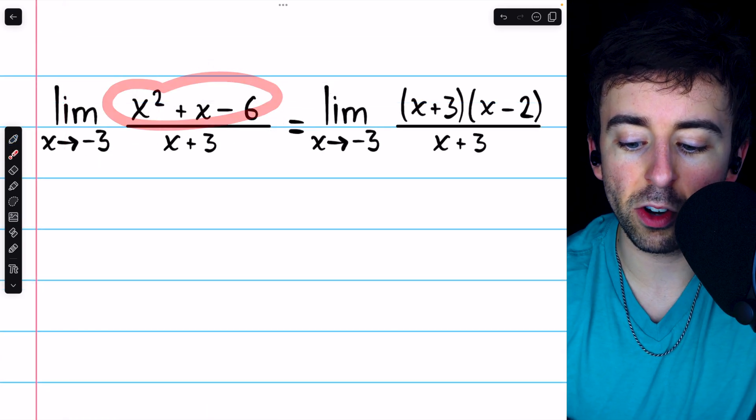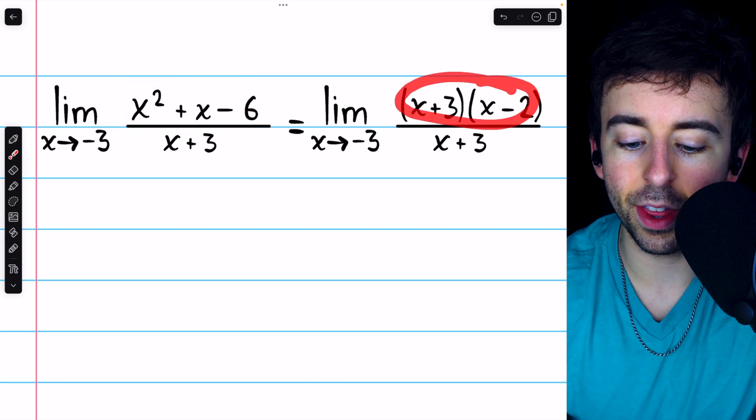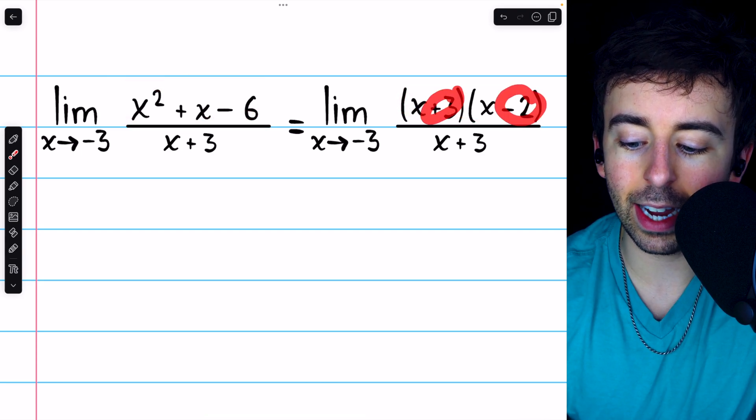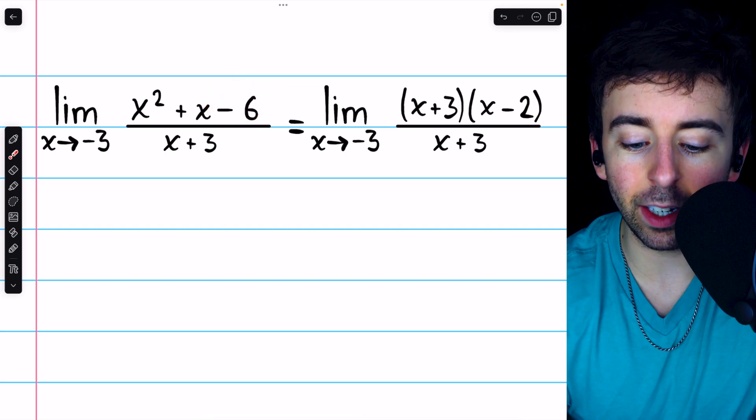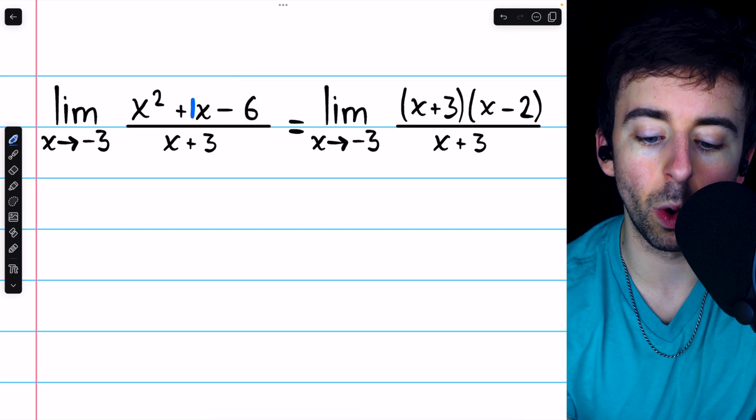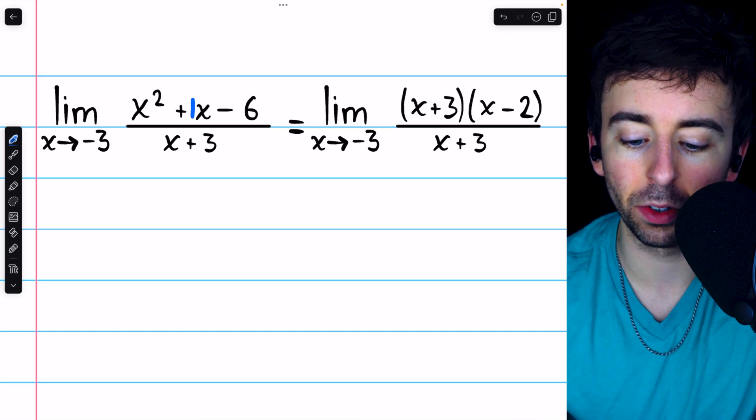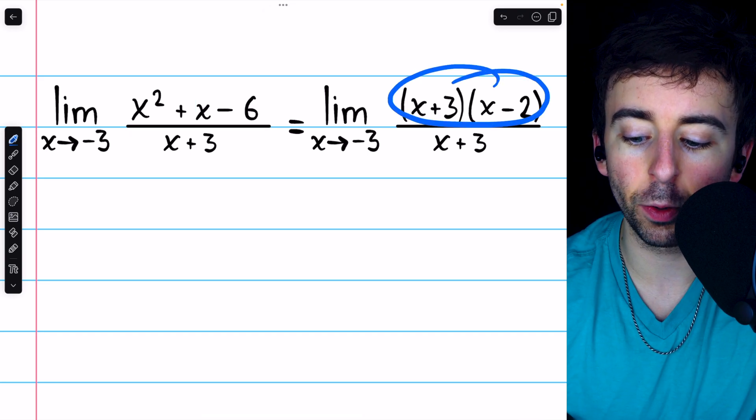You need to remember how to factor quadratics. We can factor it like this because 3 and negative 2 multiply to negative 6, and 3 and negative 2 add to positive 1, the coefficient of that middle term. So that's the factorization.